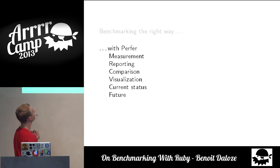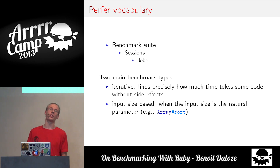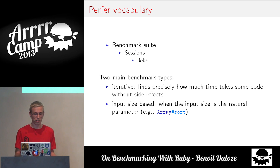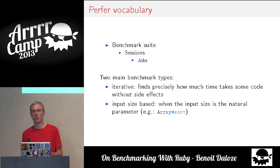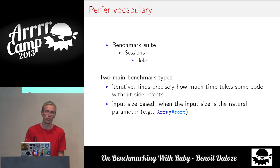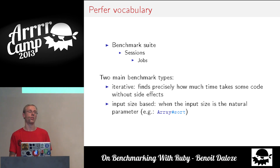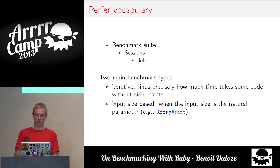I'm now going to talk about my tool, Perfer, and how it measures, reports, and compares. In Perfer's vocabulary — similar to testing vocabulary — we have a benchmark suite, within that a session (like a describe block), and then a job, which is just one benchmark, one block of code. We have two benchmark types: the iterative one, and the input-size one. For example, for array sort you could ask how long it takes to sort an array of n elements, and whether sorting takes n-squared time as the array grows. These are really two different kinds of benchmarks that you can't reduce to one.